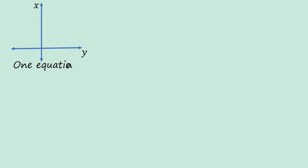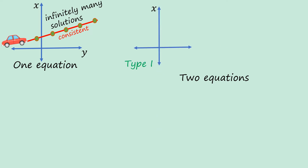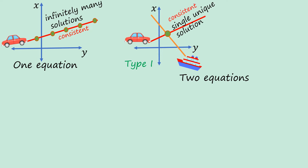Let's consider a simple illustration for the system of linear equations. For one equation, let's represent it with a car and a road as a line. Wherever the car stops gives us the solution, so it can stop at many points — meaning there are infinitely many solutions, and the system must be consistent. For two equations, type one: we consider two equations represented by a car and a shape, each on a line. They meet at a particular point — like a bridge linking the two — giving a single unique solution, and the system is consistent.